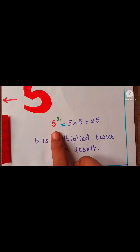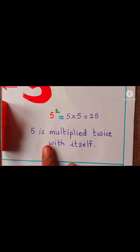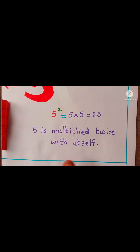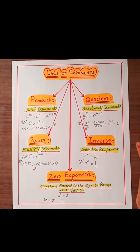5 raised to 2 means 5 is multiplied twice with itself. Now let's look at the log of exponents rules.